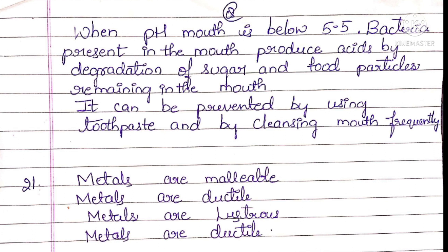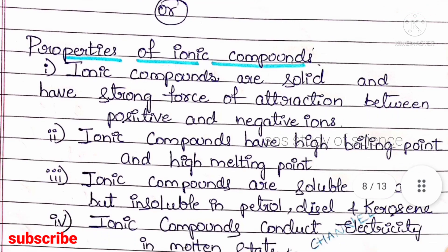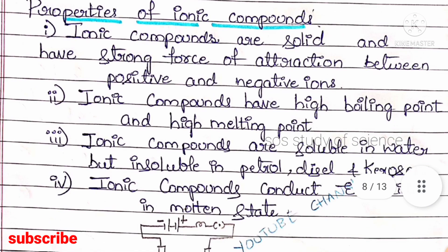Question 21 asks for any four physical properties of metals. Metals are malleable, ductile, lustrous, sonorous, and have high boiling and melting points — any four will do. Optionally, you can write properties of ionic compounds: they are generally solid with strong force of attraction between positive and negative ions, have high melting and boiling points, are soluble in water but insoluble in petrol/diesel/kerosene, and conduct electricity in the molten state.